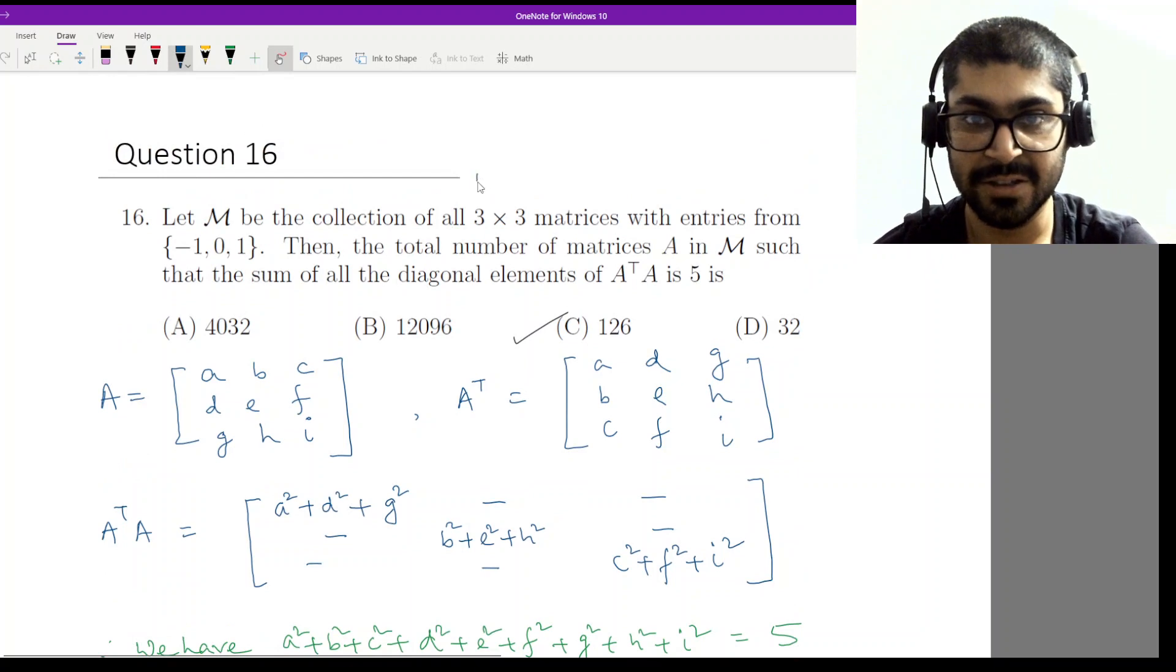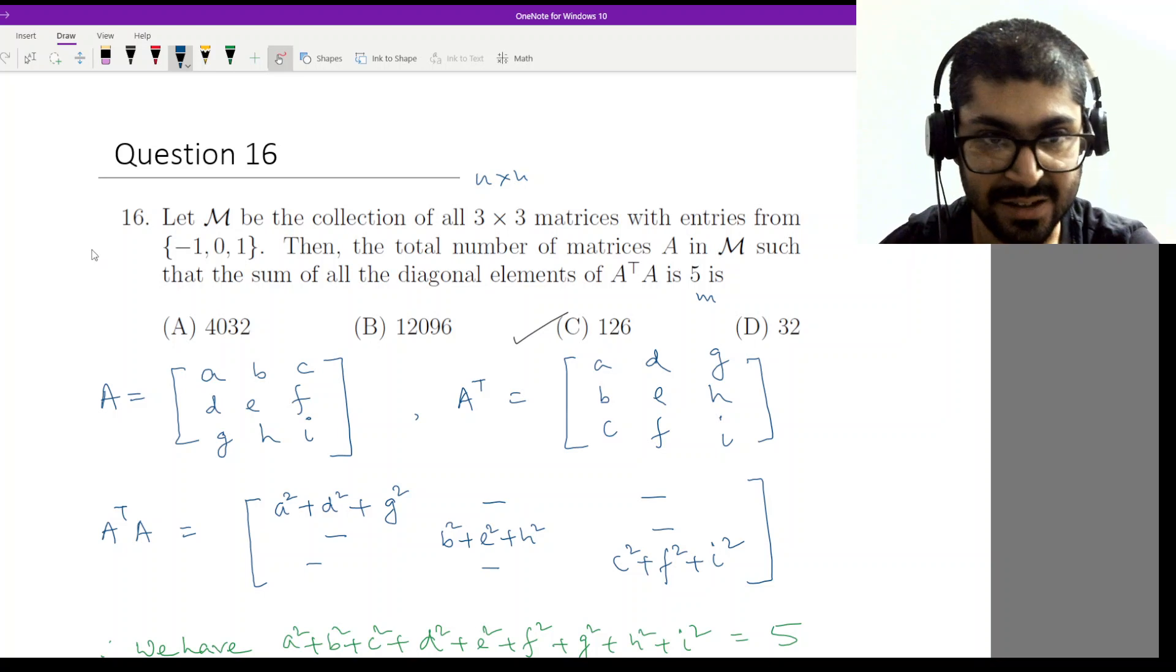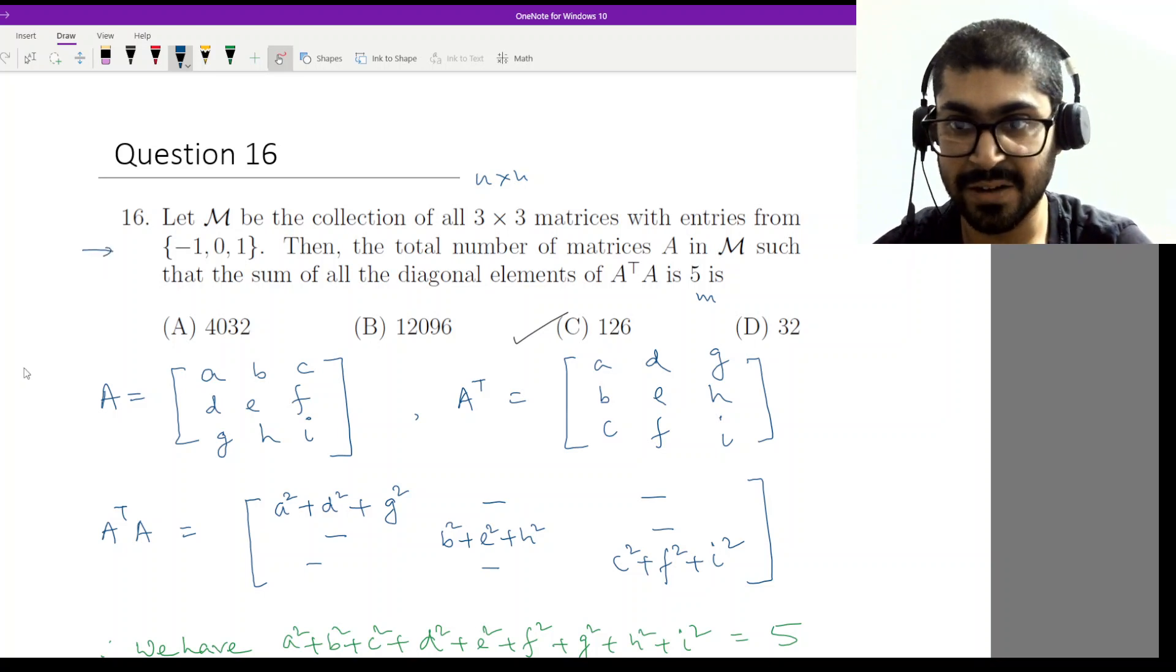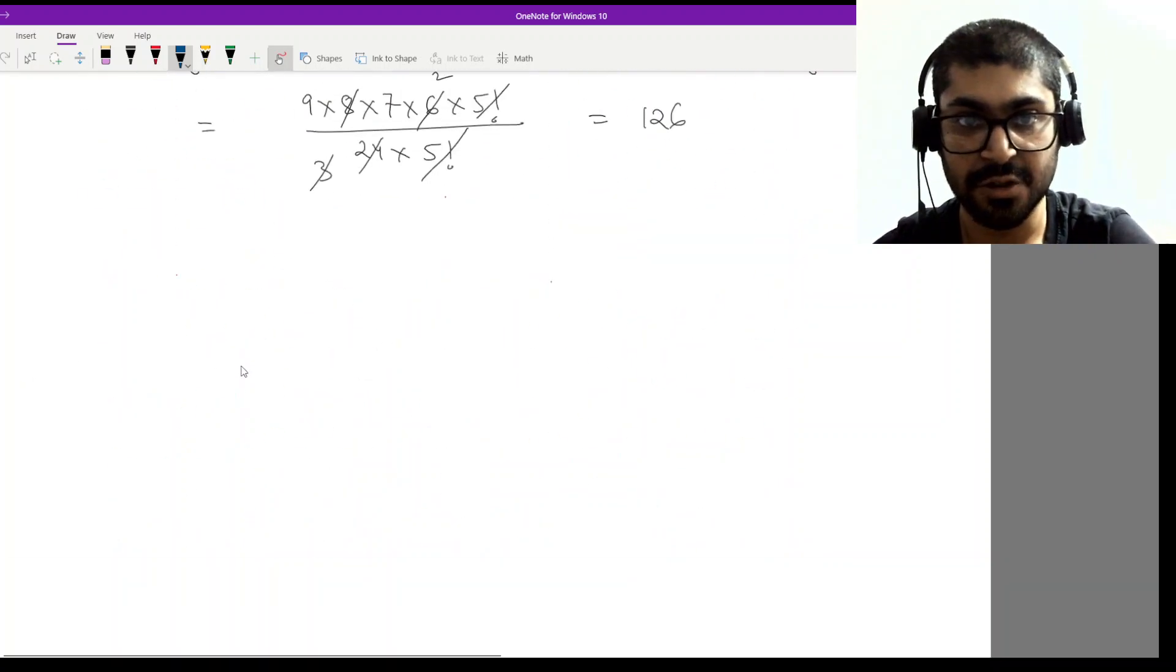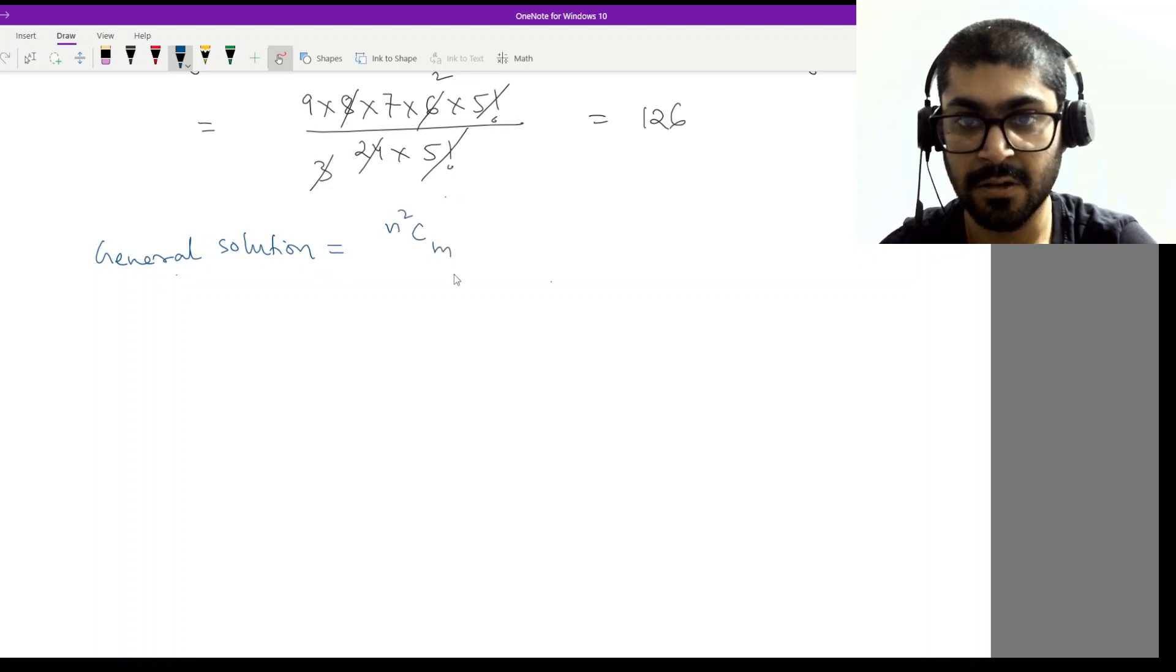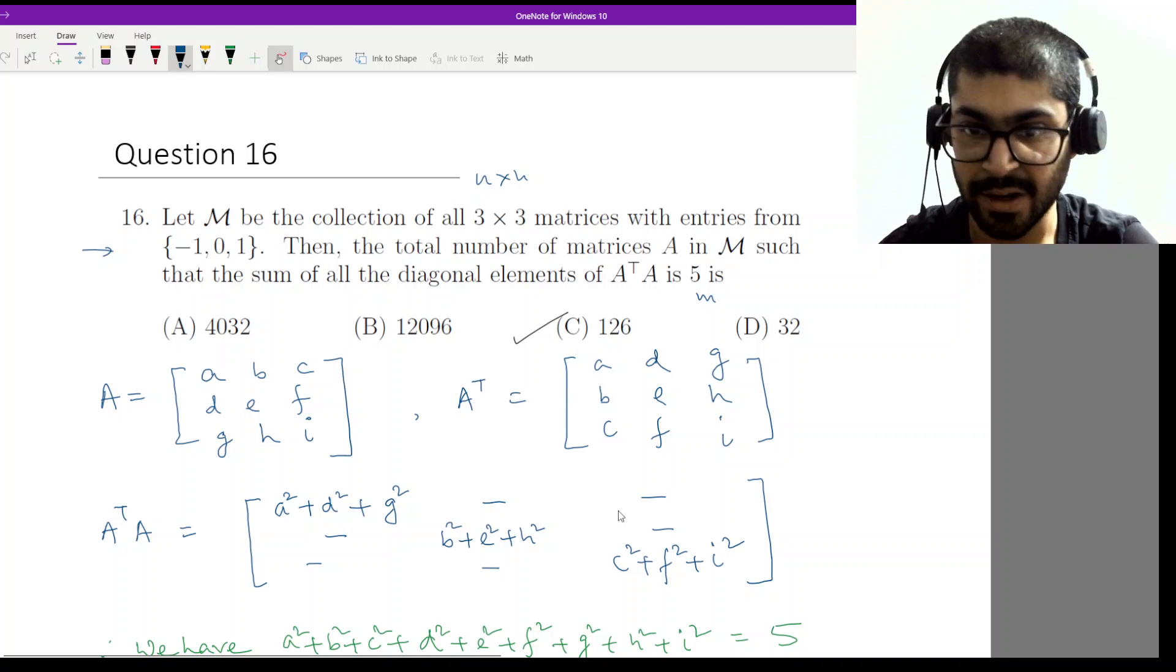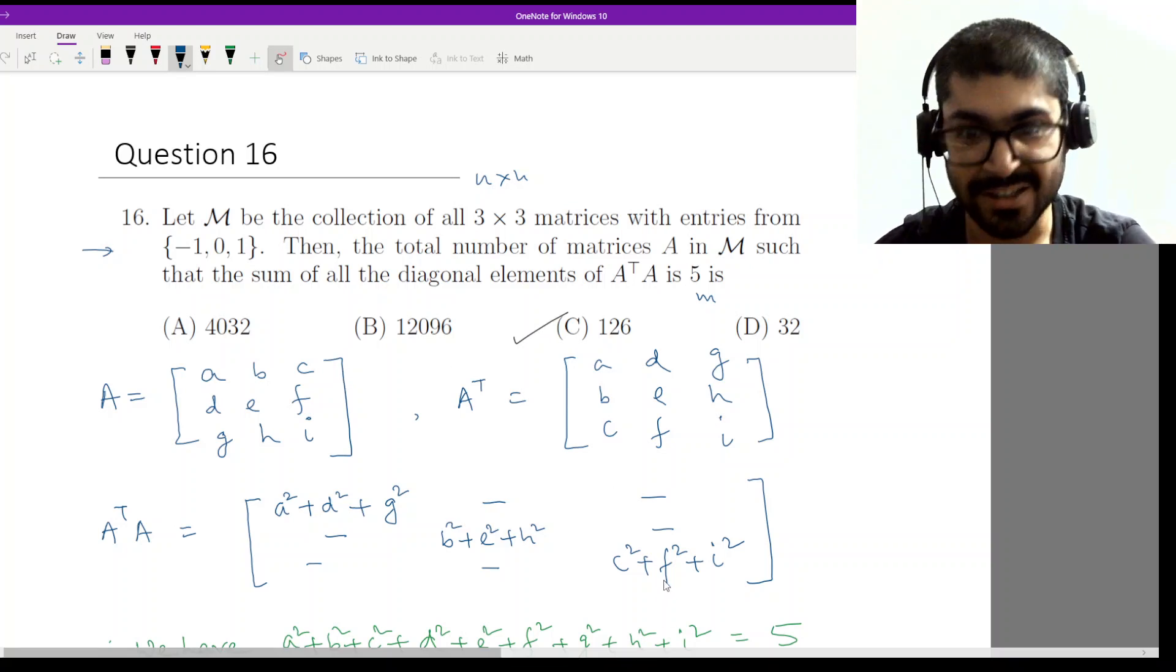If this was n×n and if the sum was m, and this was the same sample set that the values were taken from, the general solution would be n²Cm. You just have to evaluate this and give the answer.